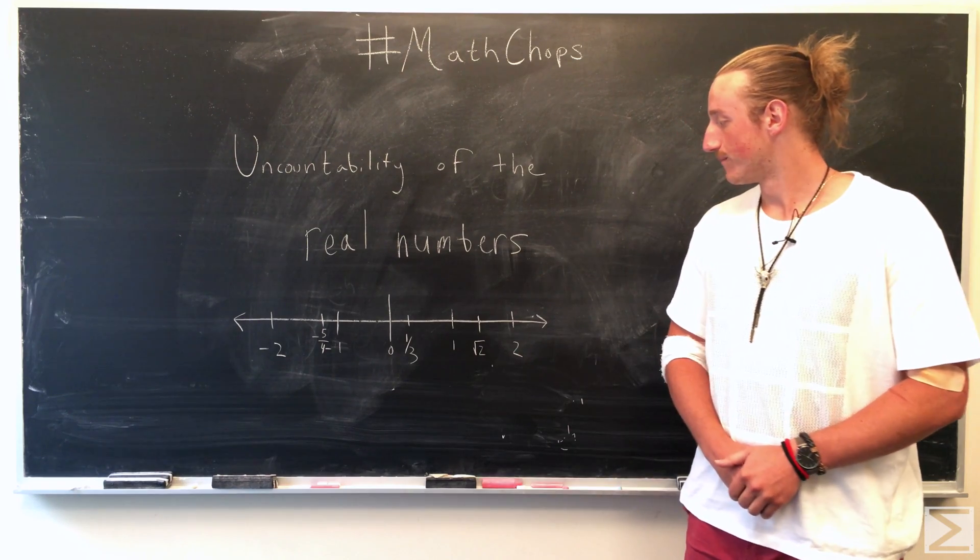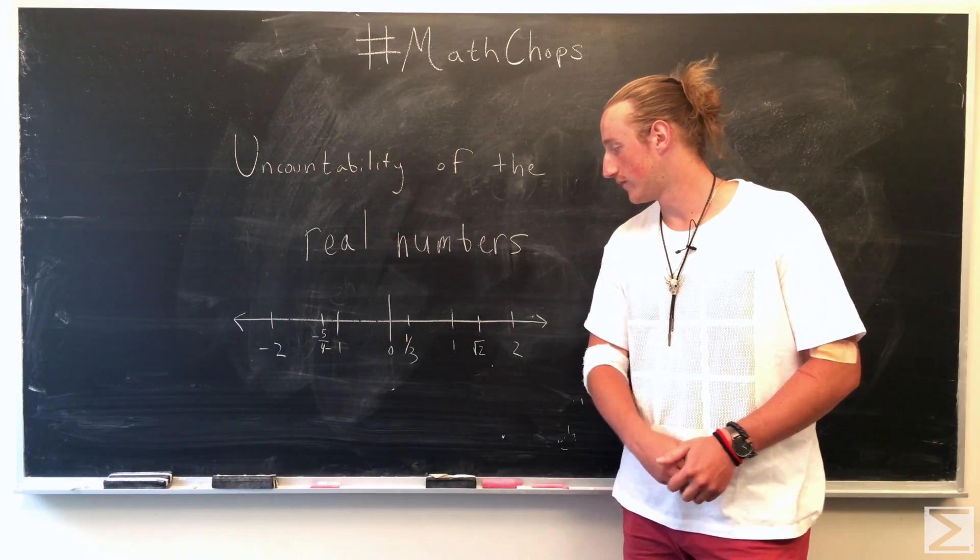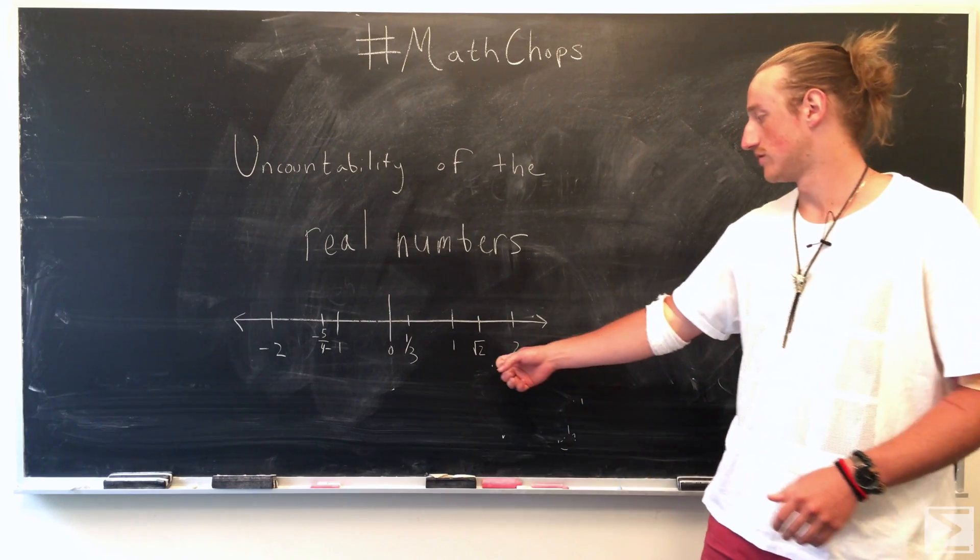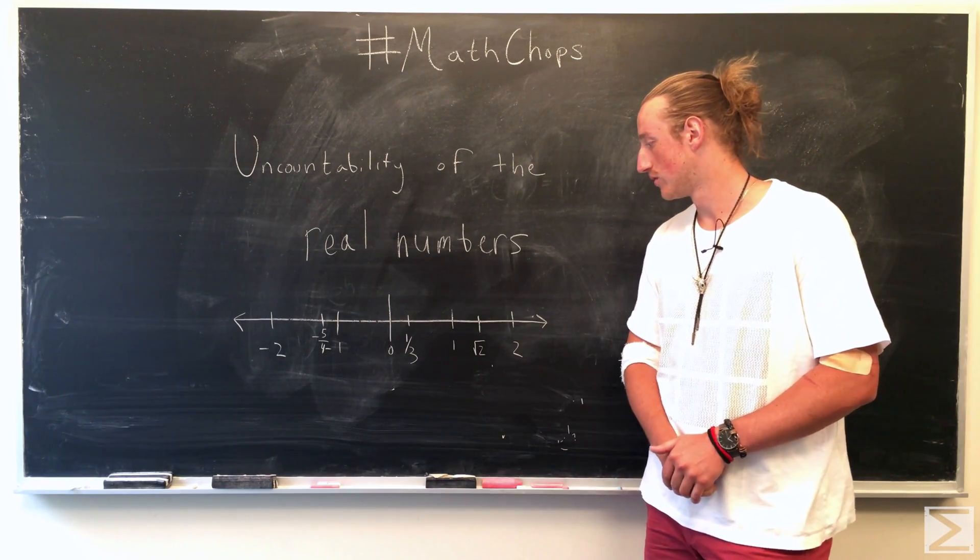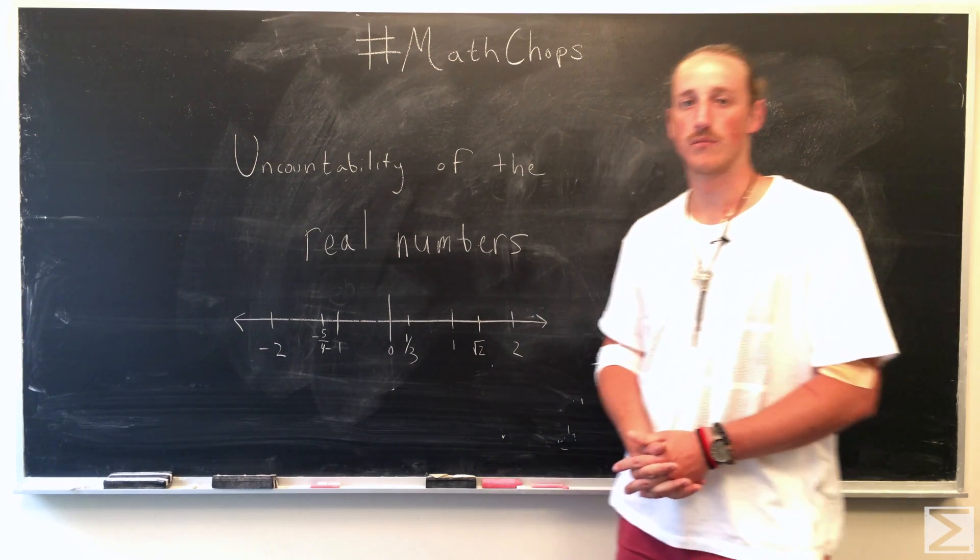So you have natural numbers, 0, 1, 2, integers, negative 1, negative 2, irrational numbers, square root of 2, then you have fractions and other decimals along the number line.